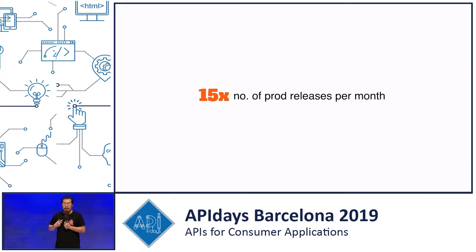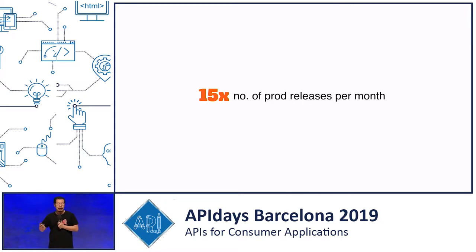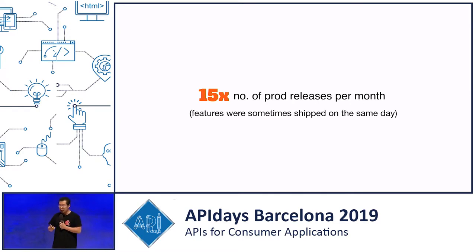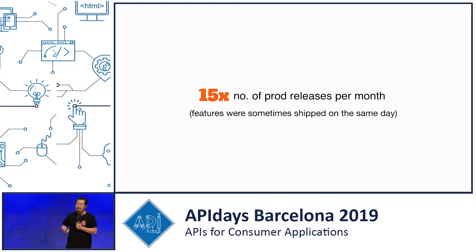More importantly for me as a team, we went from doing deployments to production maybe four to six times a month, to easily averaging about 80 to 100 deployments to production every month with the same size team. We didn't have to hire lots of developers to go faster — we just allowed every single developer to be more productive. Sometimes features were discussed with the product team, implemented, tested, and deployed all within the same day.